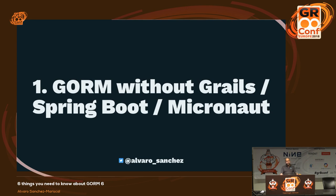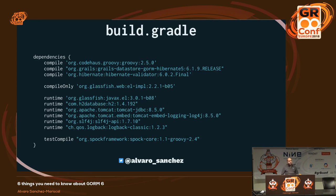The first feature is GORM without Grails, or even Spring Boot, or even Micronaut. This is possible since the latest versions. This would be pretty much the whole Gradle build you need — a bunch of dependencies, but that's all. Groovy of course if you want to use it as a language, then this is GORM for Hibernate. You could also use GORM for MongoDB or whatever. If you're using the Bean Validation API you need an implementation on the classpath, so that's the Hibernate Validation dependency.